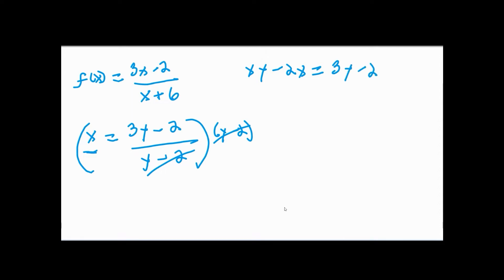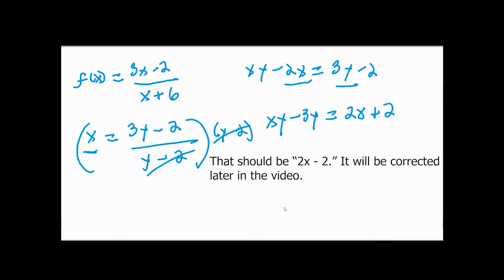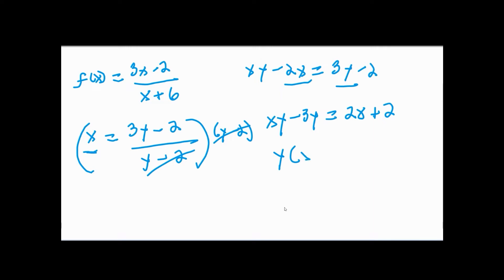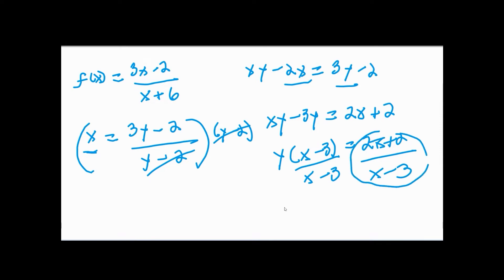My objective is to solve for y, so I get all terms with y on one side and all terms without y on the other. Moving 3y over and 6x over gives: xy - 3y = -6x - 2. Then I factor out the y: y(x - 3) = -6x - 2. Dividing both sides by (x - 3) gives the inverse: f⁻¹(x) = (-6x - 2) / (x - 3).